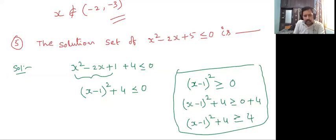But here, x minus 1 whole square plus 4 less than or equal to zero given. Therefore, there are no x values.